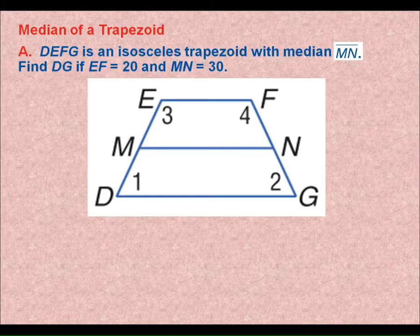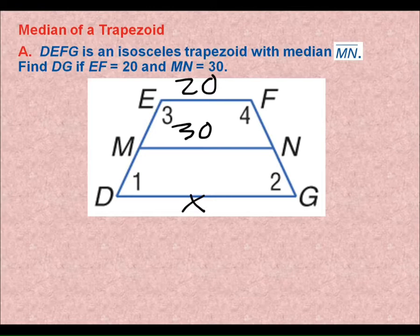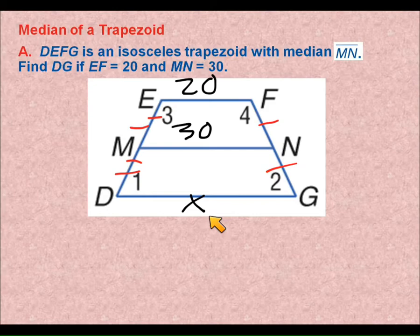So in this figure, it tells me this is an isosceles trapezoid with median MN. EF is 20, MN is 30, find DG. So these are just numbered angles, angle one, angle two, angle three, angle four. I know this is an isosceles trapezoid, so I know that piece is congruent to that piece. I know that piece is congruent to that one, and that one is congruent to that one. It's a median, joins the midpoint of both of the legs. I want to find out what X is.